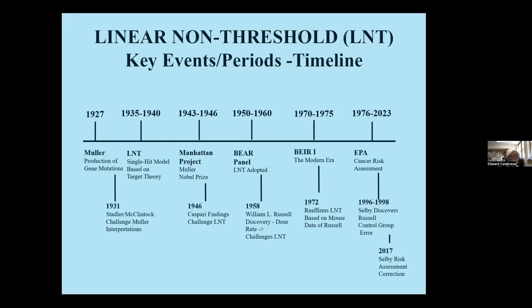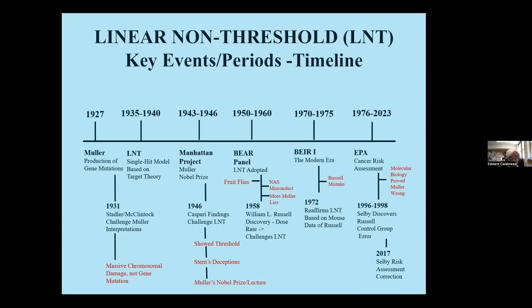I want to show you the historical framework of this LNT model to let you think that even though this is a historical evaluation, this history actually continues to the present time. It really starts with Muller in 1927 — being the first to produce what he called gene mutations — and it leads all the way to 2023, in which there is considerable challenging of LNT based upon these historical issues and recent discoveries.